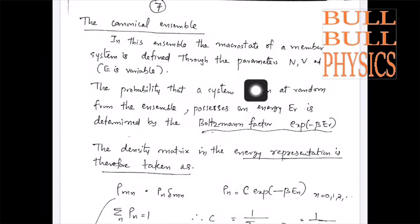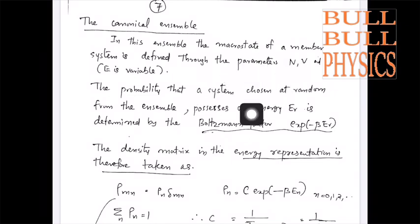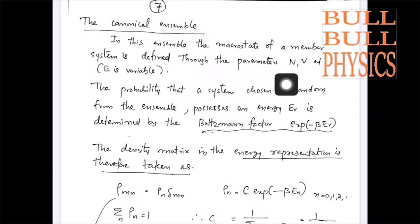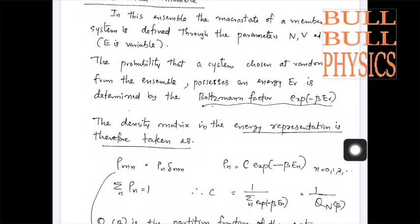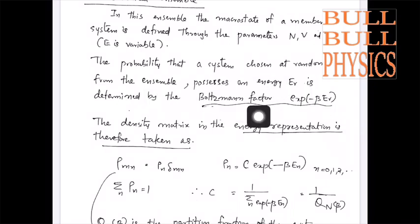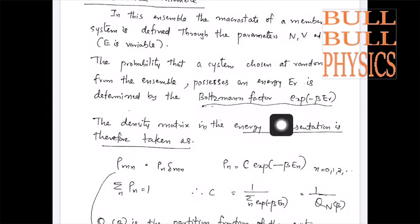In this ensemble, different from the micro canonical ensemble, the macro state of a system is defined through the parameters N, V and T — number of particles, volume and temperature — and we know energy is a variable here. The probability that a system chosen at random from the ensemble possesses an energy E_r is determined by the factor exponential minus beta E_r.